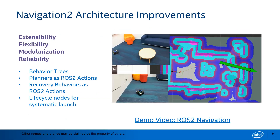The Navigation 2 project is our attempt to meet all of these goals. The high-level goals were extensibility, flexibility, modularization, and reliability. The ways we set about meeting those goals were: integrating behavior trees instead of move base, moving planners to be ROS2 action-based (which allows writing them in other languages), pulling out recovery behaviors as action-callable components, and moving existing nodes to be lifecycle nodes so they can be controlled more systematically.